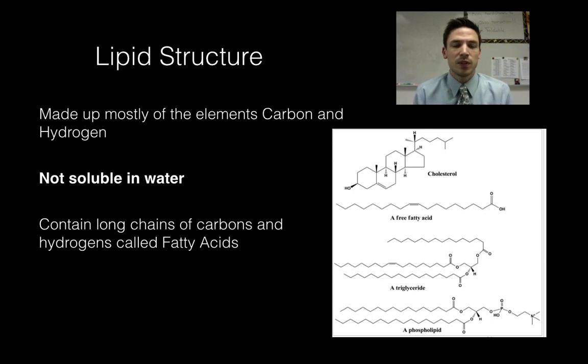Last but not least is lipids. So lipids I say for last because they technically don't have a monomer. Lipids are going to be made mostly of carbons and hydrogens. One thing to note about them is that they are not soluble in water so these are things like fats, oils, waxes, things that don't mix well with water. They don't have a typical monomer but what we can notice about their structure is that they contain long chains of carbons and hydrogens and we call those chains fatty acids or fatty acid chains.